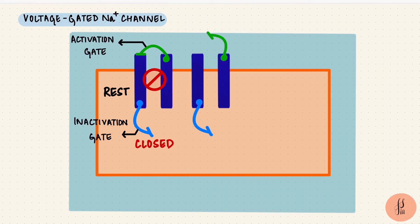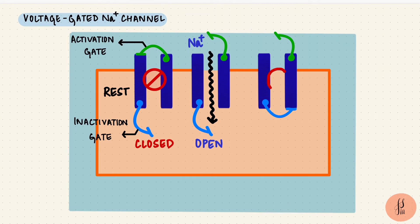Open is when the activation gate opens. Now ions can pass through. And when the inactivation gate closes, that's when the channels become inactivated. Ions can't pass through again. And after a short duration, they come back to the closed state again.